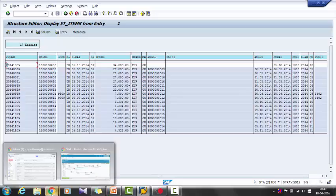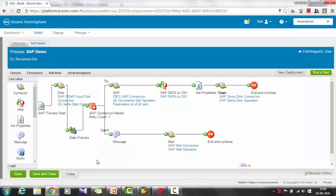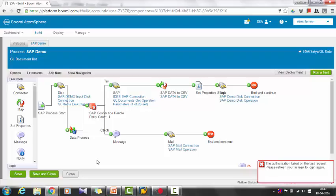Now, I will be showing the Dell Boomi process to get data from SAP into Dell Boomi. This is AtomSphere.